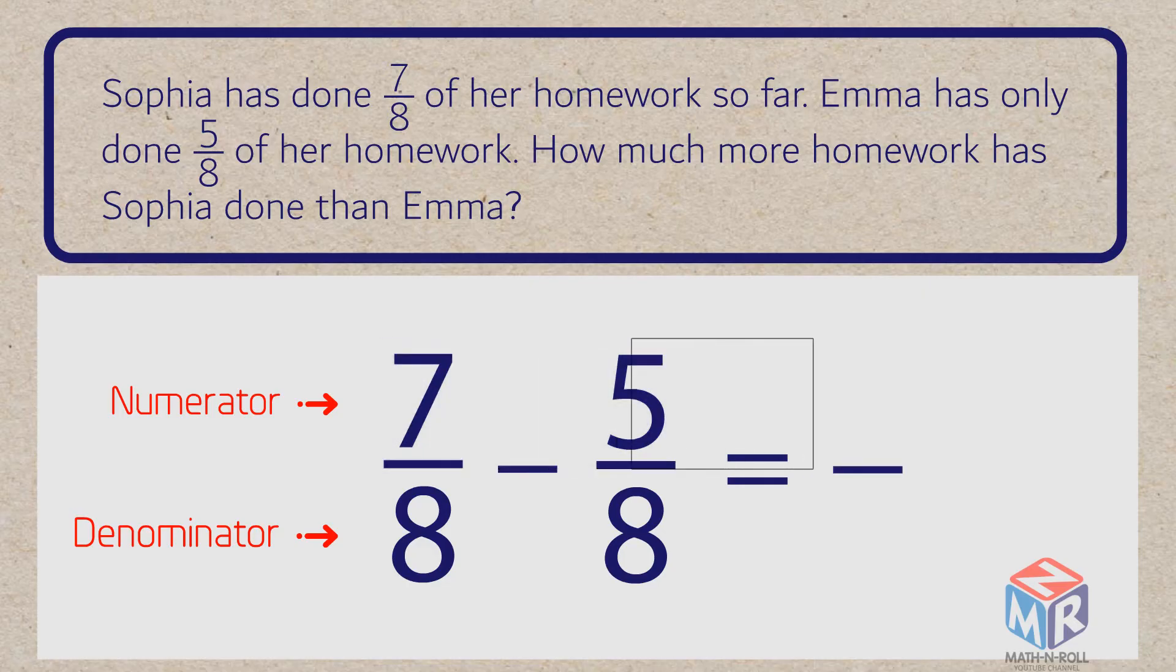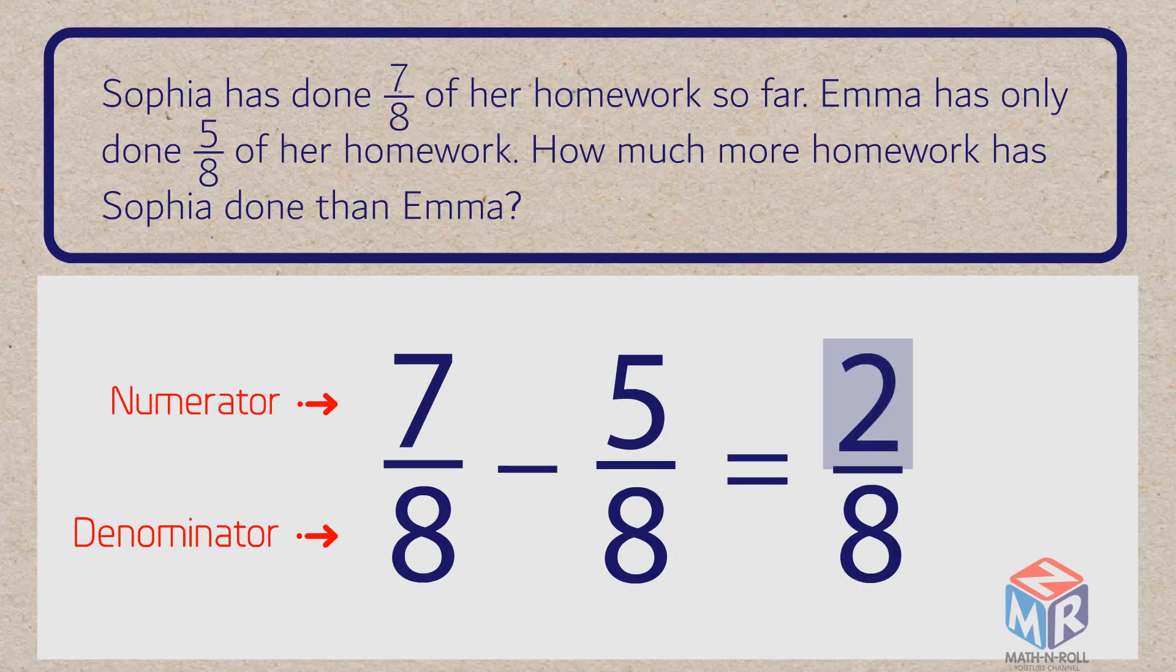just subtract the numerators. Keep the denominator the same. 7 minus 5 equals 2. The answer is 2 eighths.